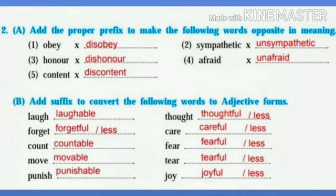First: Laugh becomes Laughable. Forget becomes Forgetful. Count becomes Countable. Move becomes Movable. Punish becomes Punishable. Thought becomes Thoughtful. Care becomes Careful. Fear becomes Fearful. Tear becomes Tearful. Joy becomes Joyful. In these words we used suffixes to form adjectives.